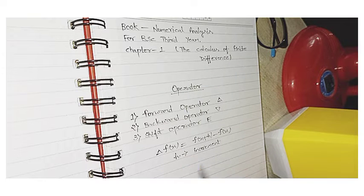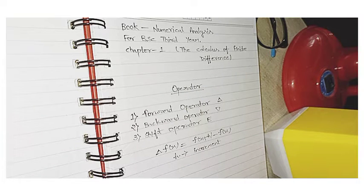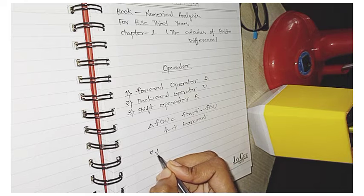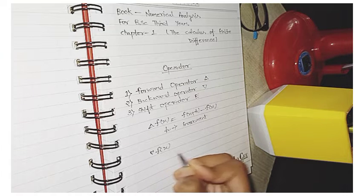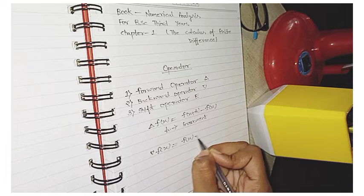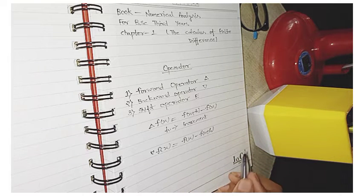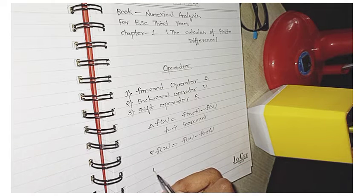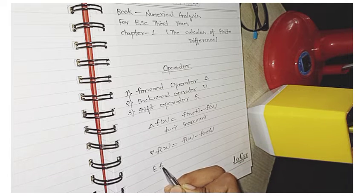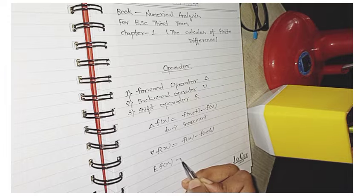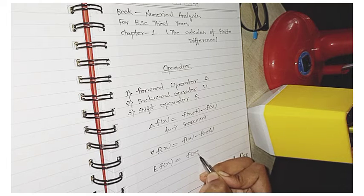Second formula is backward operator. So it is denoted by this. And here is the value of fx. fx is any function. There is fx minus fx minus h. So here h is also increment. So this is the formula of backward operator. Then now another is shift operator. It is denoted by E. And the formula of this operator is fx plus h.